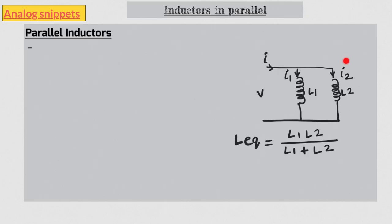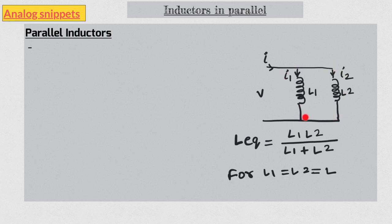We all know that if two inductors are in parallel, the equivalent inductor value is given by this equation. In the case when these two inductor values are equal, this equation gives an equivalent value of half the original inductance. But this equation is only true for magnetically isolated inductors.